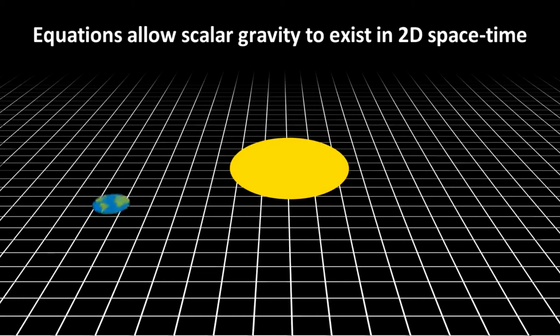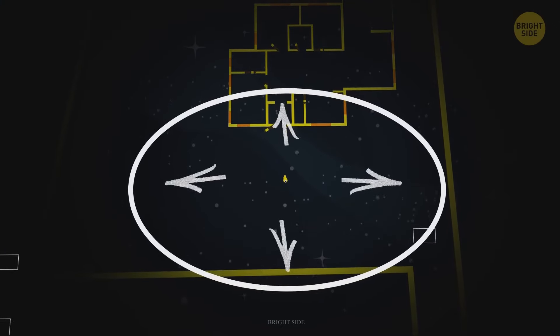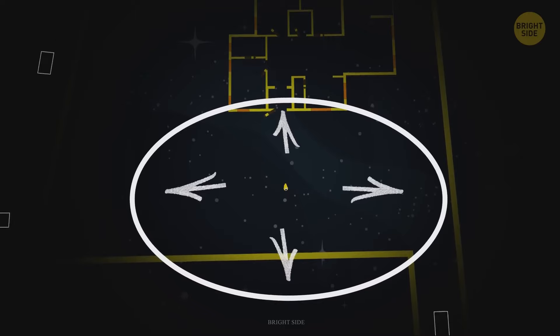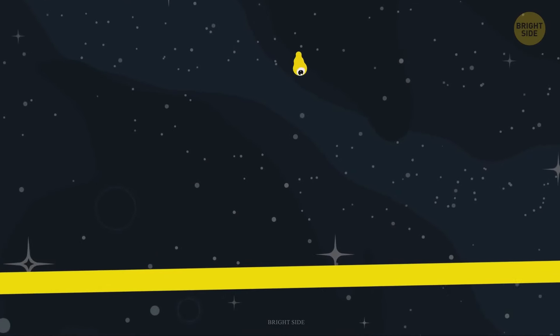Imagine a round planet orbiting a round sun. Beings on the planet could travel forwards or backwards around the planet. They could jump up or down on the surface of the planet. Beings on the planet could not go around one another.